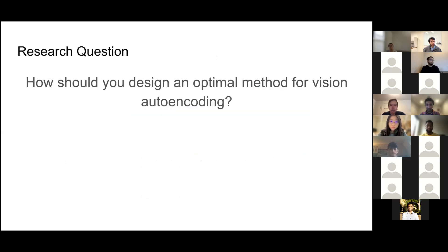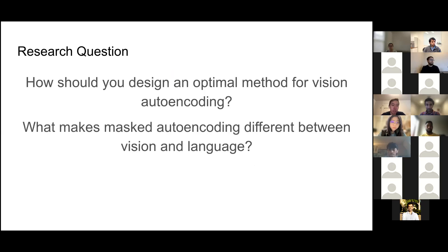The idea of masked autoencoders has been applied to vision as well, and some research precedes BERT, but progress in vision lags behind NLP. The research question the authors try to answer is: how should you design an optimal method for vision encoding? But to first answer that question, the authors try to understand what makes masked autoencoding different between vision and language.